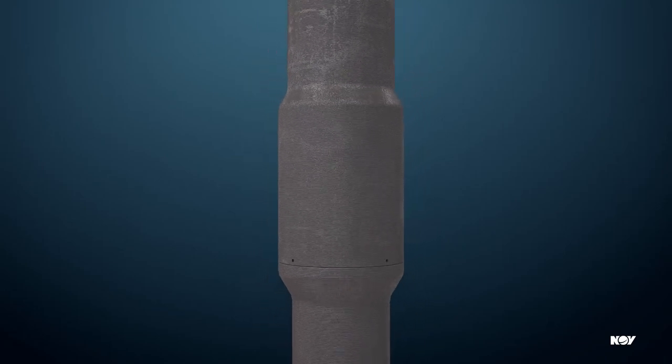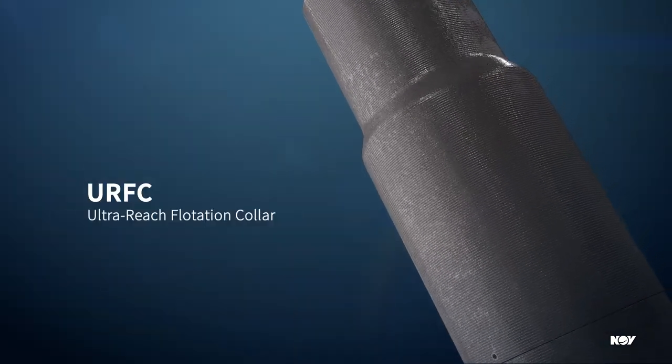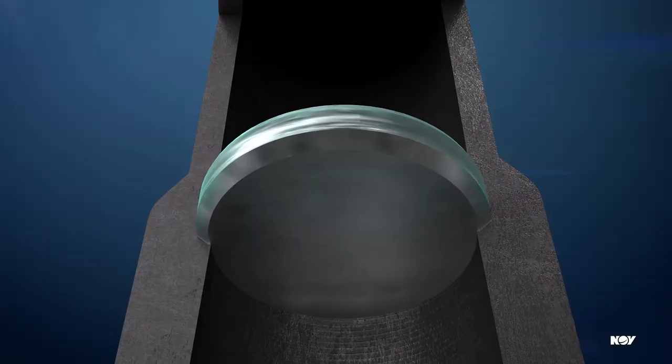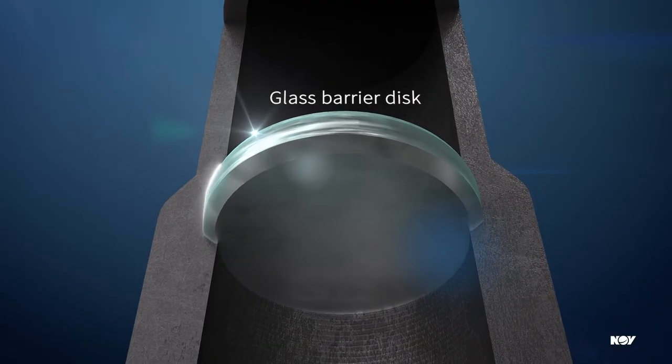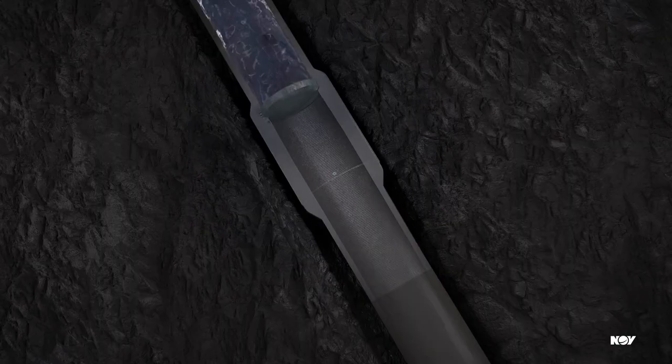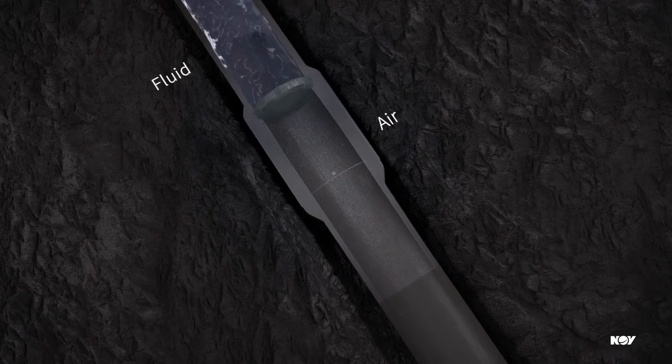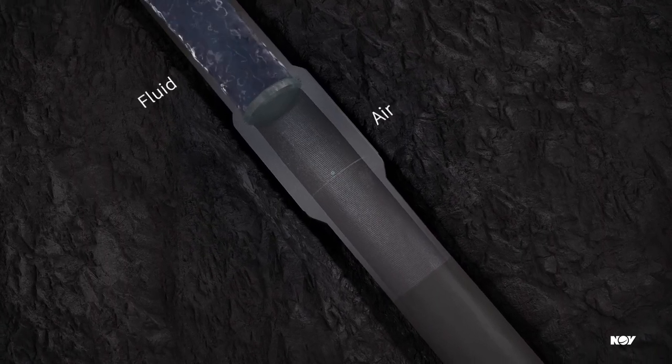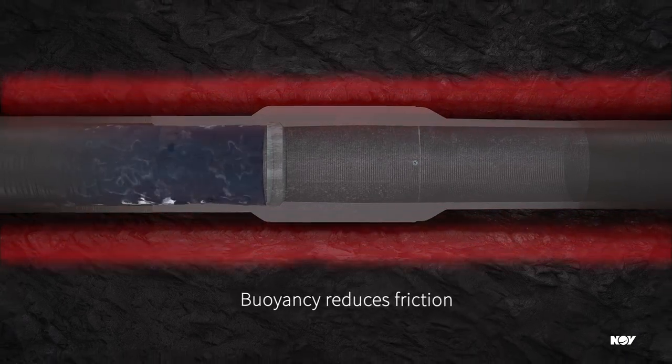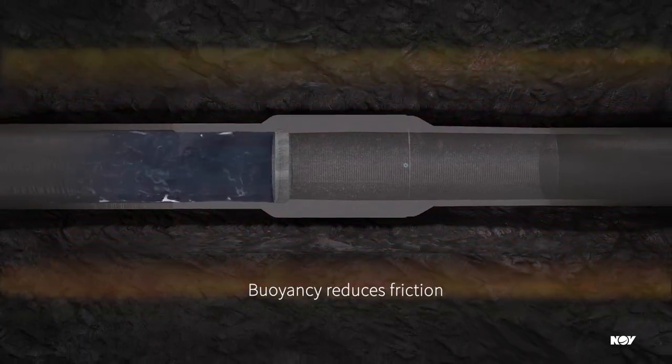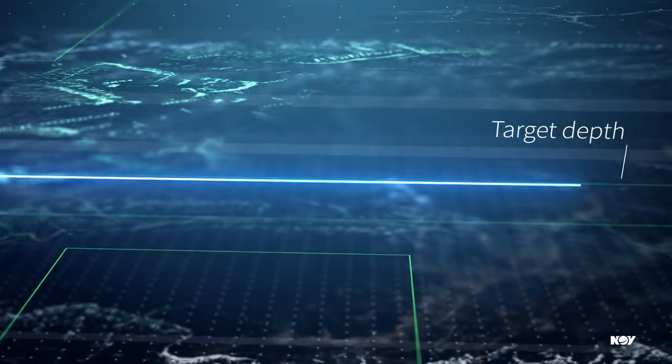NOV's Ultra-Reach Flotation Collar, or URFC, has an internal glass barrier disc. It traps air in the horizontal section and separates it from fluid in the vertical section. Created buoyancy helps reduce friction in the horizontal section and run the casing string to the target depth.